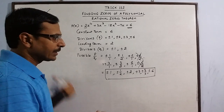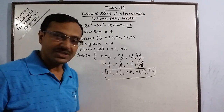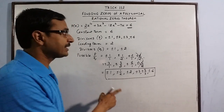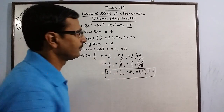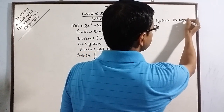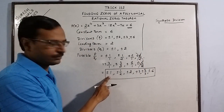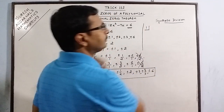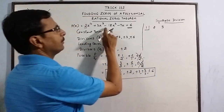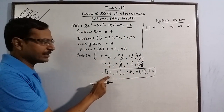Now we check whether these values are zeros using synthetic division. Synthetic division allows us to quickly check whether a value is a zero. I am checking x=+1 first. Write the coefficients of all terms of this polynomial: 2, 3, −12, −7, and 6. Now, 2 comes down as is. 2 into 1 gives 2; 3 plus 2 is 5. 5 into 1 gives 5; −12 plus 5 is −7.